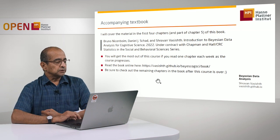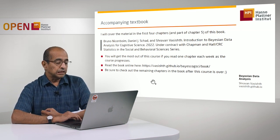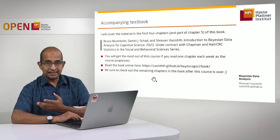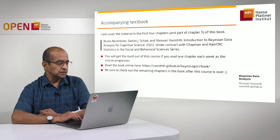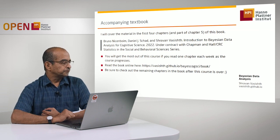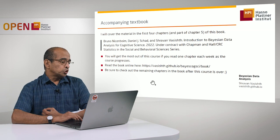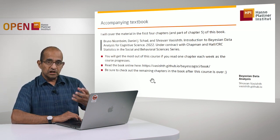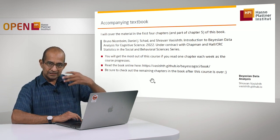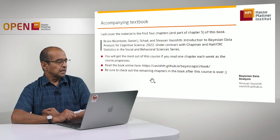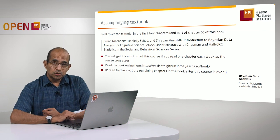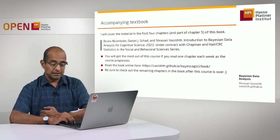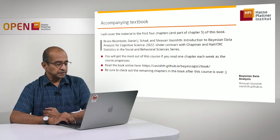I will be using a textbook that we have written. This book is available online and will remain online. It will be published very soon with CRC Press, but the online version will be accessible to you at all times. At the Hasso Plattner Institute portal I will provide a PDF of this textbook so you can read it offline as well. My advice is to use this book as you watch the lectures and to read the lecture notes after each week, since they expand on the ideas from the short lectures. Once you finish this course, I'd advise you to read the remaining chapters, which give you access to more complex models using the STAN probabilistic programming language.